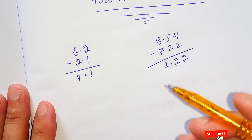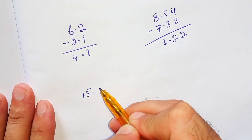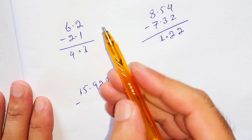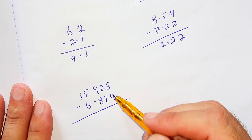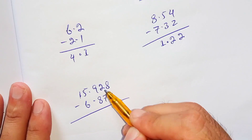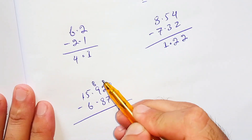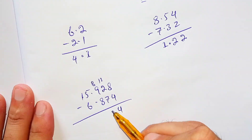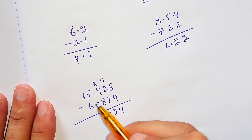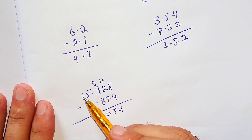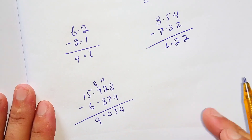Let's take another example in which we have to borrow: 15.928 minus 6.874. 8 minus 4 is 4. We cannot directly subtract 7 from 2, so we borrow from 9 — the 9 becomes 8 and the 2 becomes 12. So 12 minus 7 is 5, and 8 minus 8 is 0. Bring down the decimal point, and 15 minus 6 is 9. So 15.928 minus 6.874 is equal to 9.054.